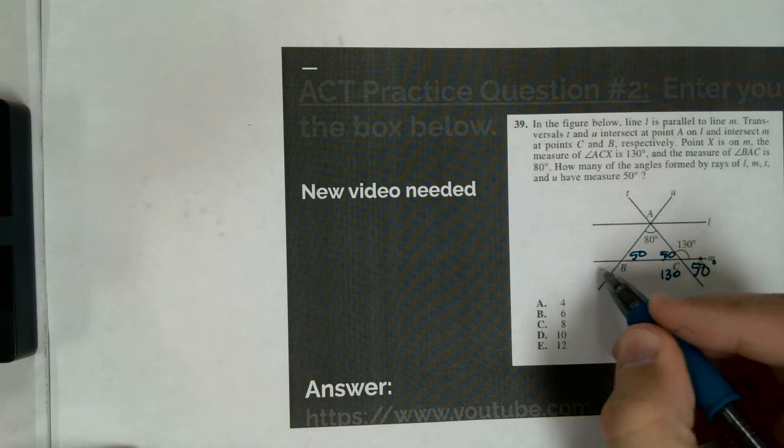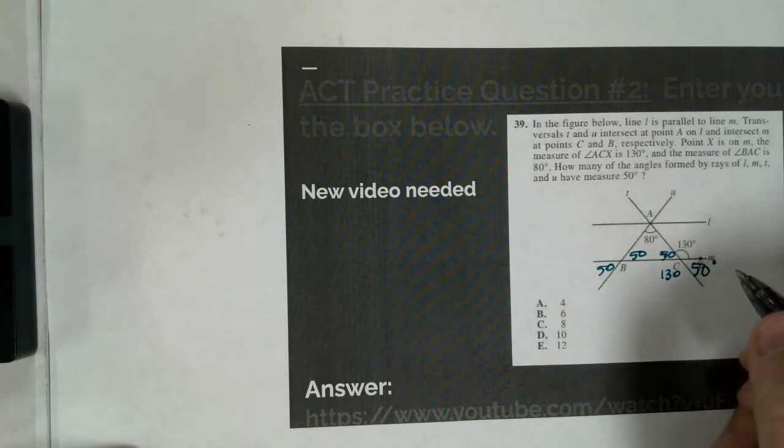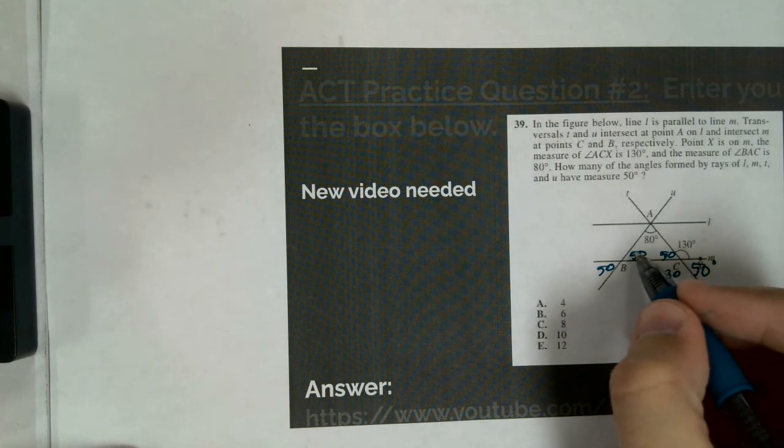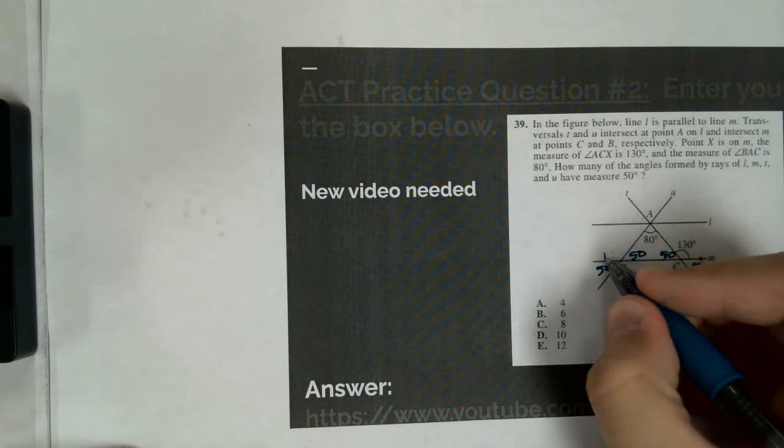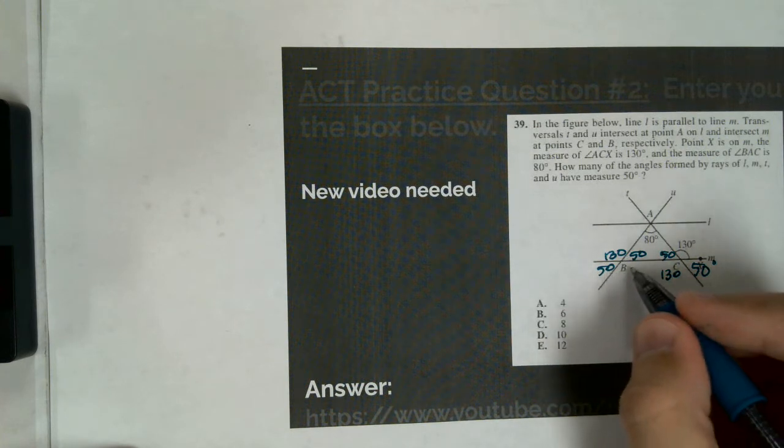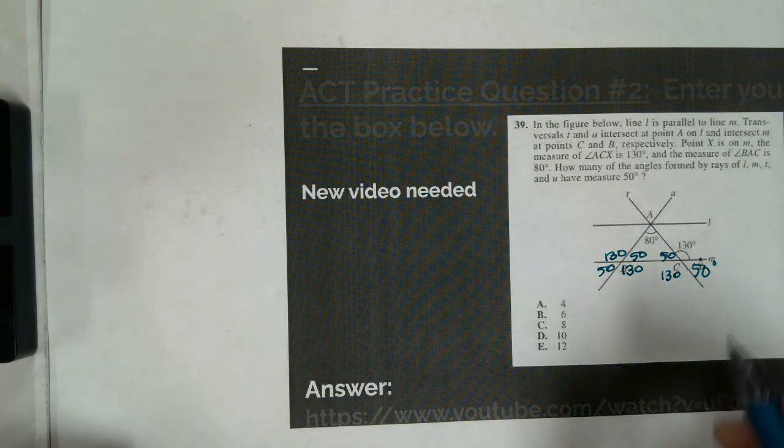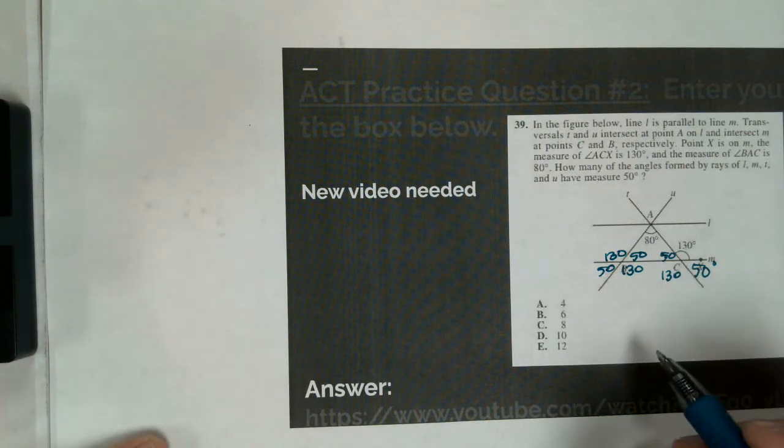This 50 degree is vertical to this one, meaning congruent. So that would make 50. This 50 degree makes a linear pair with this one, meaning supplementary. So that would be 130. This 50 makes 130 with this one. So the main thing I've been looking at right now is I've been using vertical pairs, I've been using linear pairs, and I've also been using triangle sum theorem to help me figure out what are each of the angles in this picture.